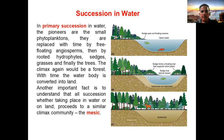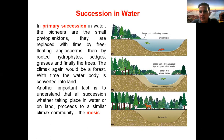An important fact is that succession, whether taking place in water or on land, proceeds to a similar climax community — the mesic. No matter what the water availability or content in that particular area, it will ultimately lead to conditions where water availability is intermediate. In some areas the water availability is less and will be increasing; in those areas where water availability is more, it will decrease and the level of moisture will also go down.